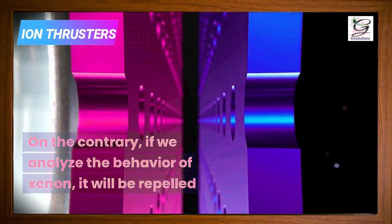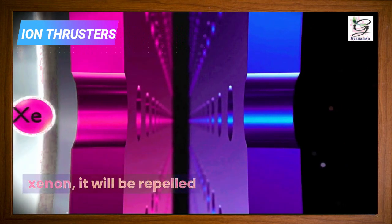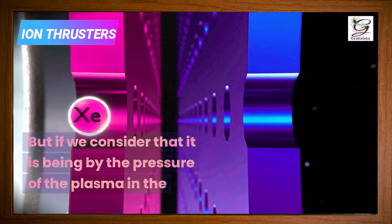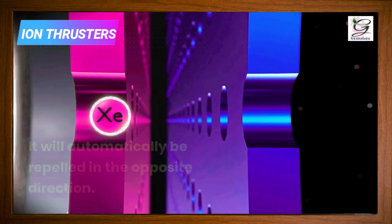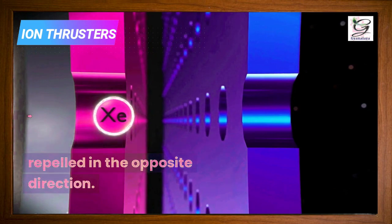On the contrary, if we analyze the behavior of xenon, it will be repelled by the first grid. But if we consider that it is being pushed by the pressure of the plasma in the container and it gets through the first grid, it will automatically be repelled in the opposite direction.